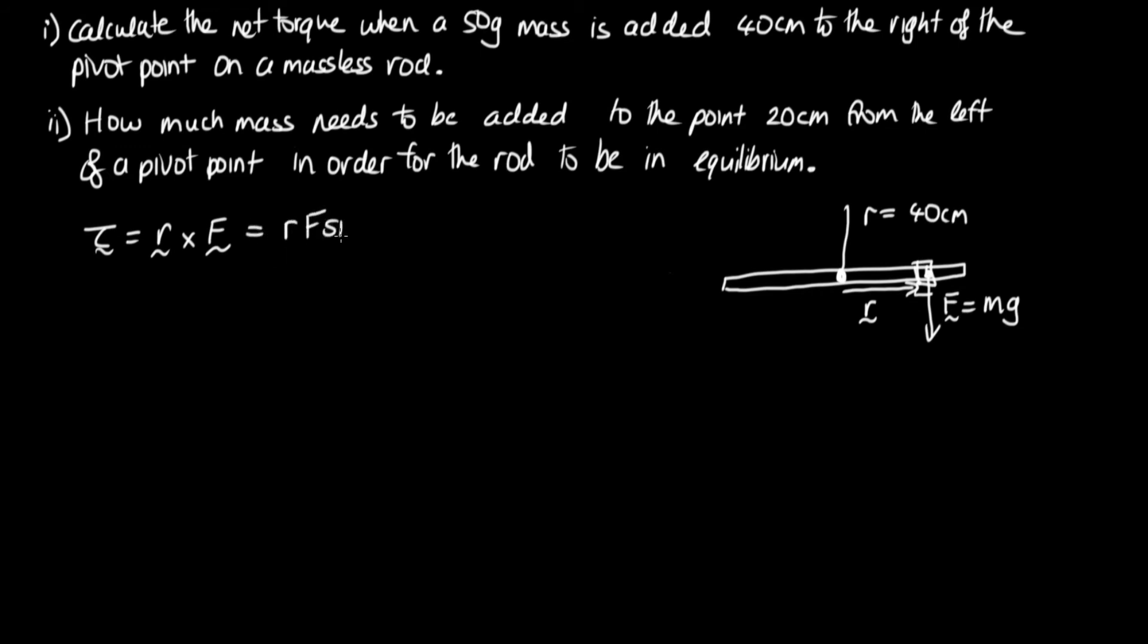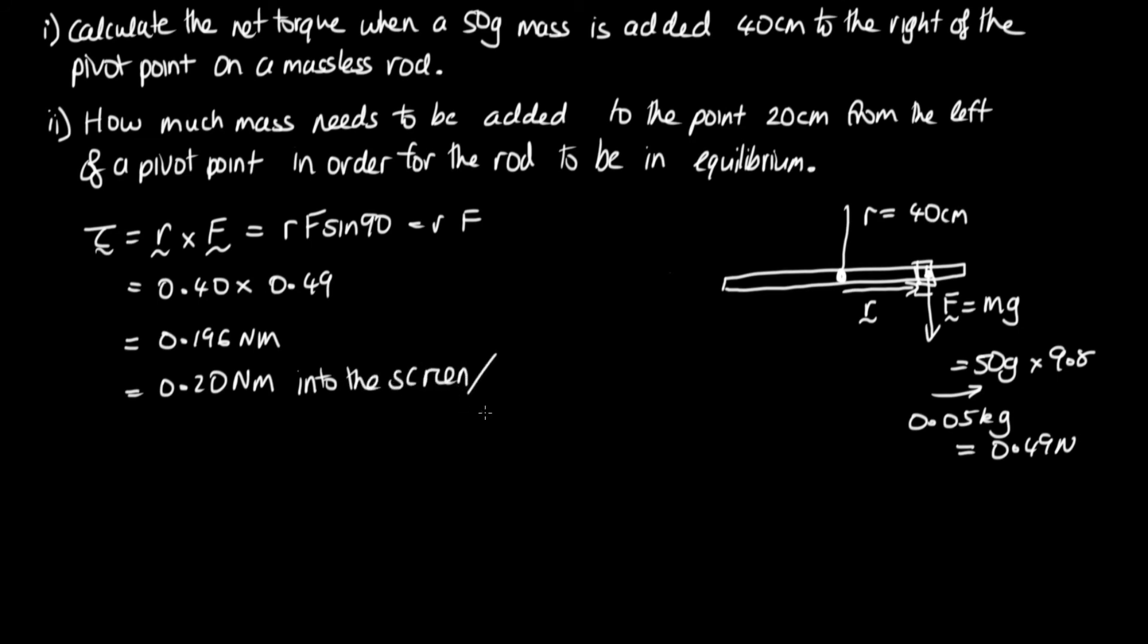This is going to be equal to rF sin 90, which is just rF. So this will be equal to r which is 40 centimeters, so 0.40 meters, times F, and F is just mg. This is equal to 50 grams times 9.8. 50 grams is 0.05 kilograms, so this is equal to 0.49 newtons. So this is times 0.49, which equals 0.196 Newton meters, which is 0.20 Newton meters. Like we said with our right hand rule, our thumb was pointing into the screen, so we can say that this is into the screen, or alternatively you could say the rod would start to turn clockwise.